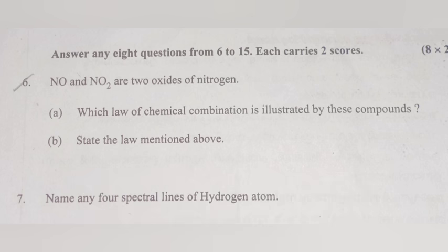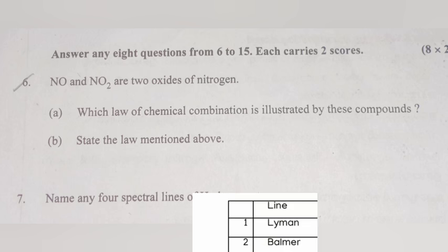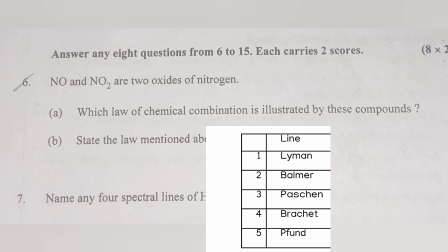Question 7: Write any four spectral lines of hydrogen atom. Answer: Lyman series, Balmer series, Paschen series, Brackett series, Pfund series. Write any four.